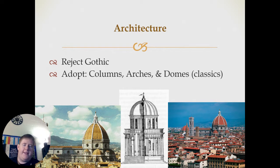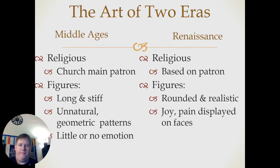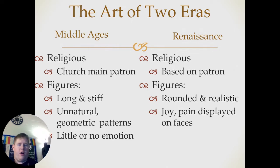We're now going to focus on architecture. They rejected the Gothic-style architecture popularized during the Middle Ages and adopted things like columns, arches, and domes, as you can see from these pictures. Comparing the Middle Ages and the Renaissance: art was still religious in both, but it changed as to who was funding it. During the Middle Ages it was mostly the church, but during the Renaissance it was individual peoples. In the Middle Ages, people were portrayed as long, stiff, and unnatural with geometric patterns and little to no emotion, whereas Renaissance art embraced human anatomy and made people look more realistic with actual emotions.